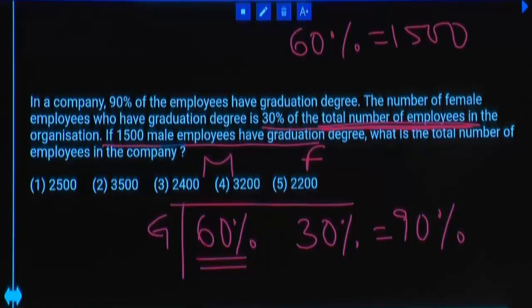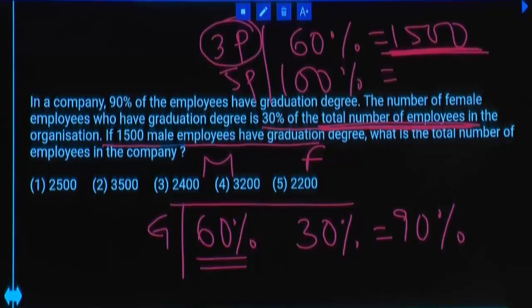Total employees 100% is equal to how much? Can we take 60% and 100% as 3 parts and 5 parts? 3 parts, how many times is 1500? 500 times. 5 parts we have to calculate. 5 into 500? 2500.